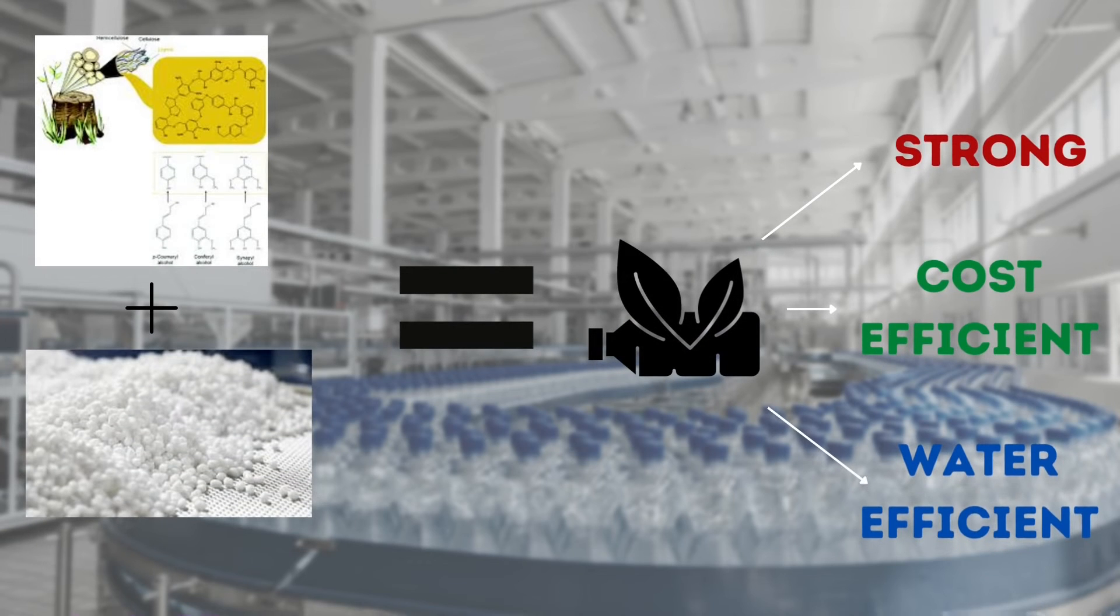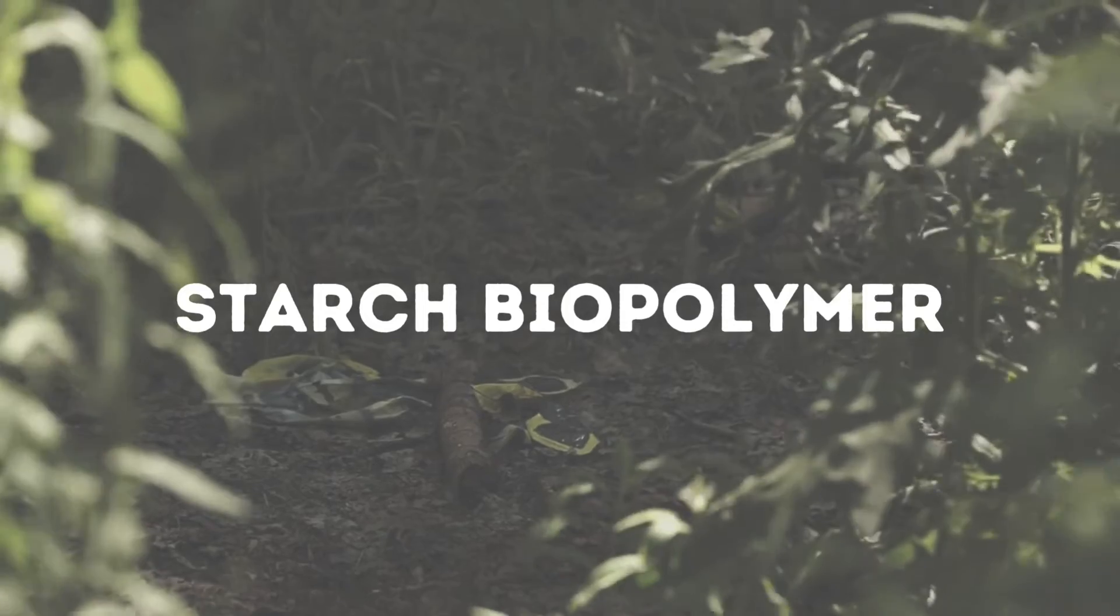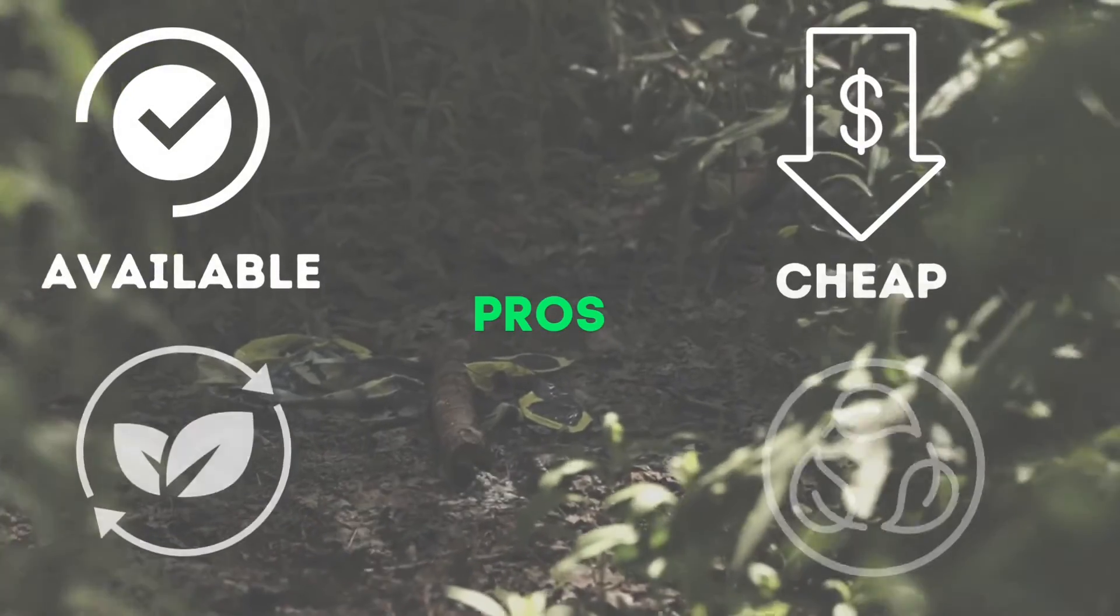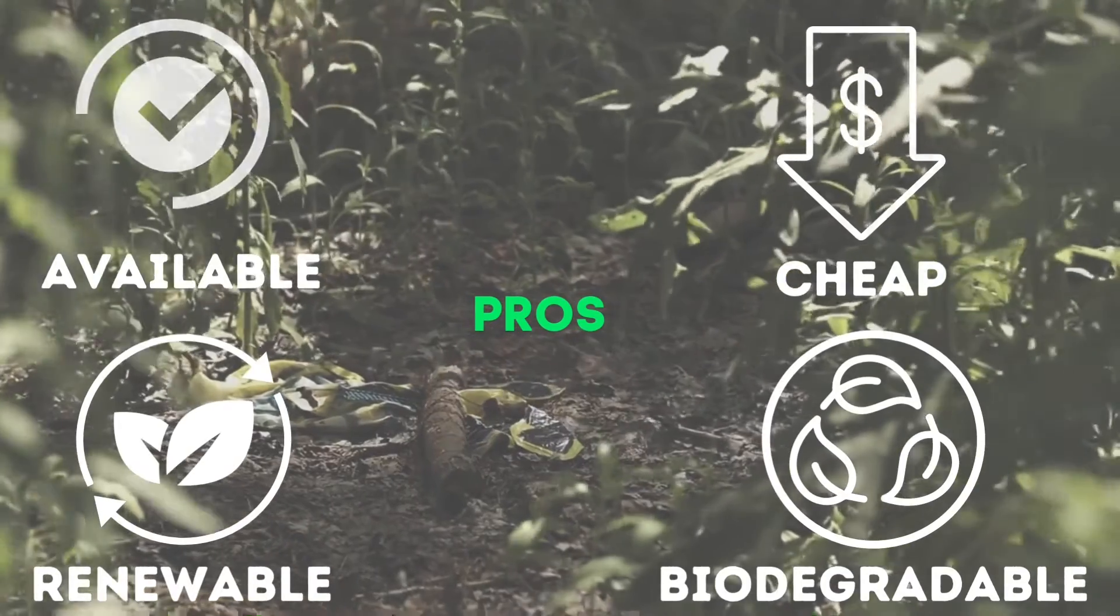To make the bioplastic, lignin and a biopolymer such as starch or protein are blended together to make a strong bioplastic that is both cost and water efficient. Most bioplastics are made with a starch biopolymer since it is widely available, cheap, renewable, and biodegradable without the risk of toxic residues being formed.